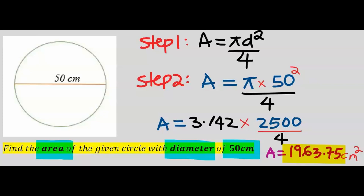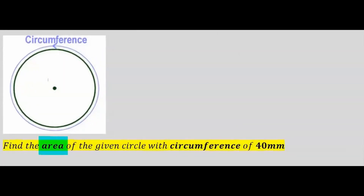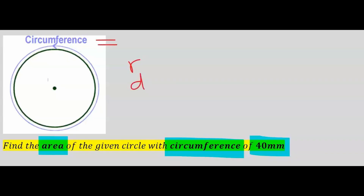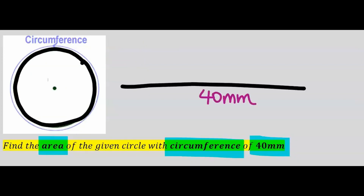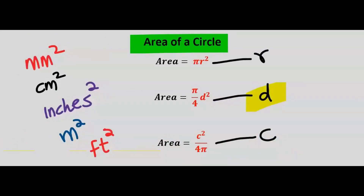Next, let's find the area of the given circle with a circumference of 40 millimeters. For this circle we have no given radius and no given diameter, but the perimeter — which is the same as the circumference — is 40 millimeters. The perimeter is the total length of the circle. With this we can still find the area. For the area with a given circumference, the formula is circumference squared divided by 4 pi.